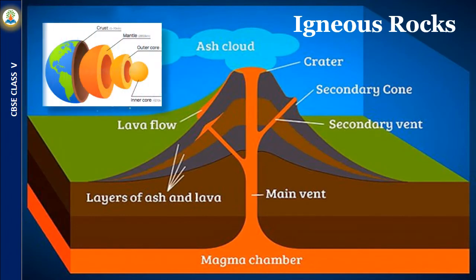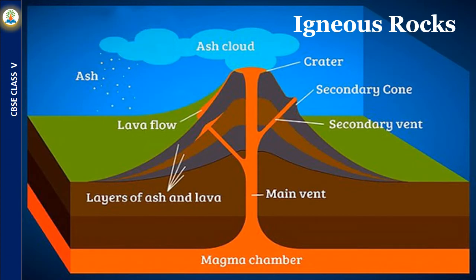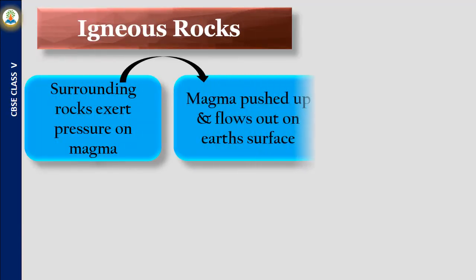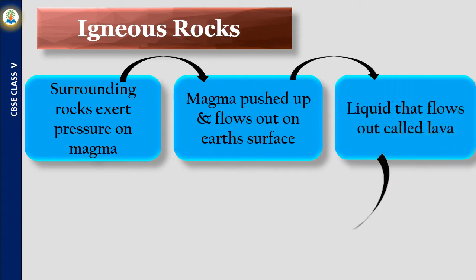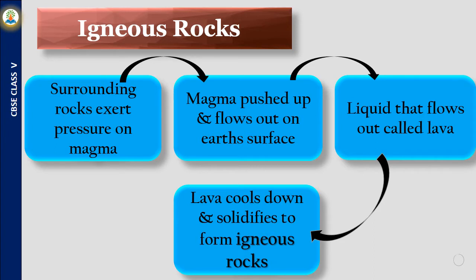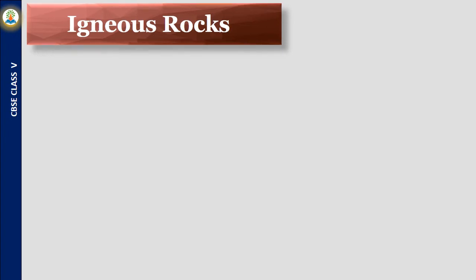The earth is made up of three layers: crust, mantle, and core. The hot and molten rocks present in the earth's core are called magma. When surrounding rocks exert pressure on magma, it is pushed up and flows out to the surface as lava, which gradually cools down and solidifies to form igneous rocks. Approximately 95% of the earth's crust is made of igneous rocks, which form the base of land, mountains, and ocean beds.